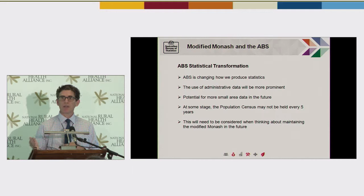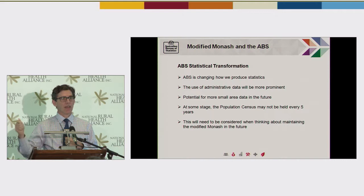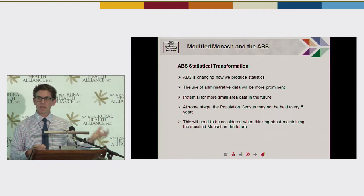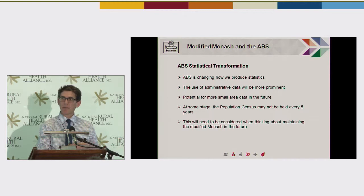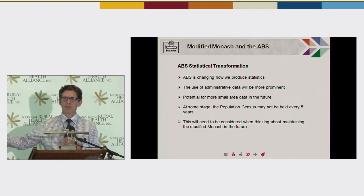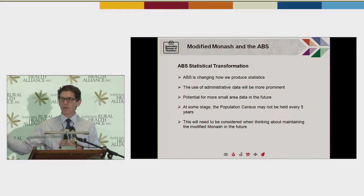It may be that in five or ten years' time we won't have a census at that five-yearly point. That means the nature of the population data going into the design of things like remoteness areas and urban centres and localities — which really underpin the Monash Model — may change in time. We may in fact have more regular data coming in that allows us to do these things, but do we want a new remoteness area every year? That changes the consideration of the natural time points we currently have with the five-yearly census, and that equation we expect to change over the medium term.